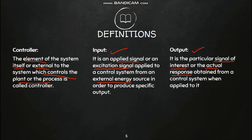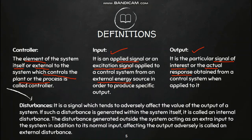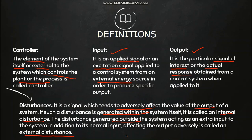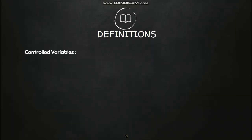Once we know what a controller, input, and output are, it is important to discuss 'disturbance.' Disturbance is the signal which tends to adversely affect the value of the output — something which is trying to change the output of the system. If it is generated within the system it is known as internal disturbance; if it is generated outside the system it is known as external disturbance. External disturbance is hard to predict, so it affects the output more adversely compared to internal disturbance.